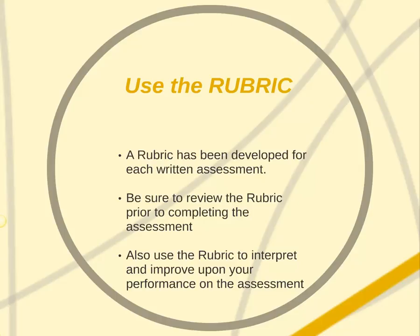If you're the kind of student that wants to move to the right in the rubric — move up in grades from the average or C to the B or A — you're going to want to go above and beyond what is just requested in the assignment. The assignment is the baseline; it's the average and what we expect of you at minimum in order to pass the class. If you want a grade that is above and beyond, you're going to need to go above and beyond. Make sure to review the rubric prior to submitting the assessment, and also use the rubric to interpret and improve upon your performance.